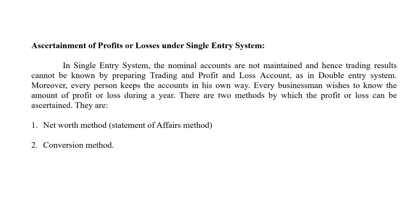In the single entry system, we are not in a position to prepare nominal accounts, so we cannot easily find out profit and loss by preparing a trading and profit and loss account as in double entry. However, in the single entry system, there are two methods to ascertain profit: the first is the net worth method — that is, the statement of affairs method — and the second is the conversion method.